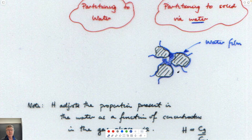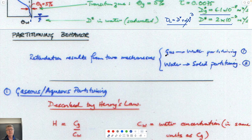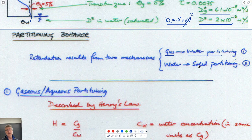The concentration in gas form will partition to water, or vice versa — an equilibrium concentration in water gives us a gas concentration. Likewise, the water will be in equilibrium with the solid over a long period of time. So we consider gas-water partitioning and water-solid partitioning separately. Gas-water partitioning is given by Henry's law.